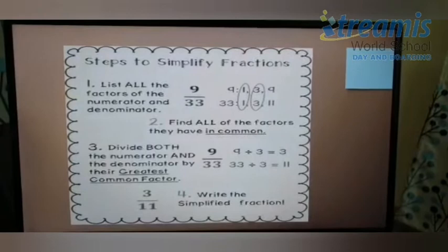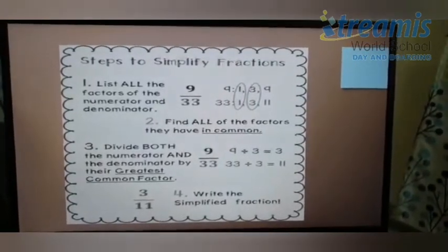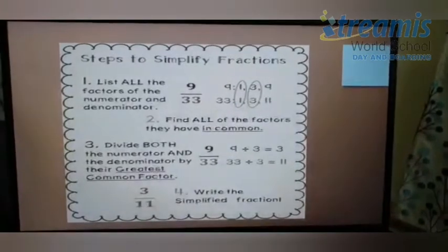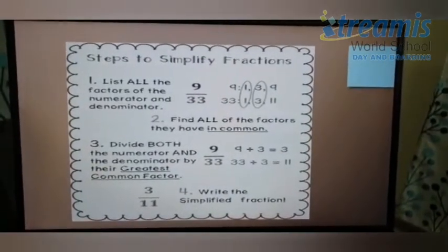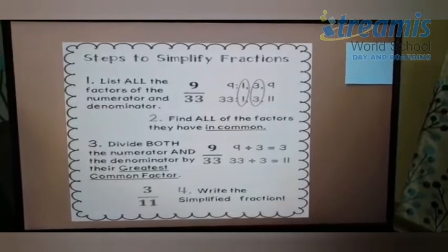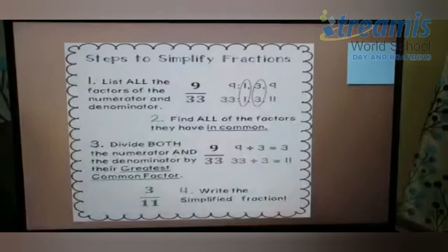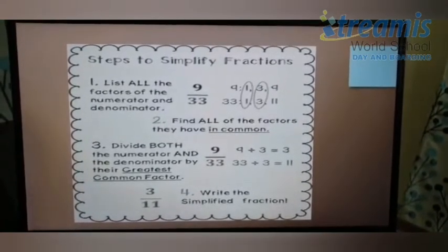In first step, you need to list down all the factors of the numerator and denominator. So, here I have taken 9/33 as my example. So, I have listed down all the factors for 9 and 33. As you can see, the factors for 9 are 1, 3 and 9. And for 33, it's 1, 3 and 11.